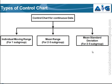So when do we use the Individual Moving Range chart, the mean-range chart, and the mean standard deviation chart? Whenever you want to make a control chart where you just have one subgroup, you go with the Individual Moving Range chart. And as a matter of fact, we use the IMR chart very frequently.